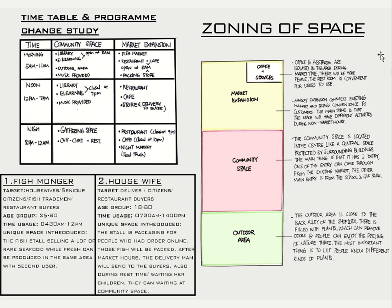The community space is located in the central area, like a central space protected by the surrounding building. It has two entries — one entry can come through from the existing market, and the other main entry is from the school and car park. The outdoor area is close to the back alley, and that field with plants can remove all doors, allowing people to enjoy the feeling of nature, study there, and do anything there. The most important thing is to let people know about different kinds of plants.